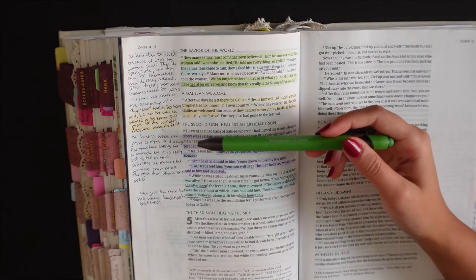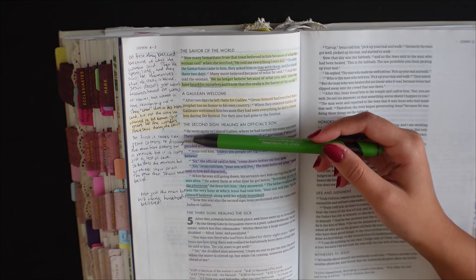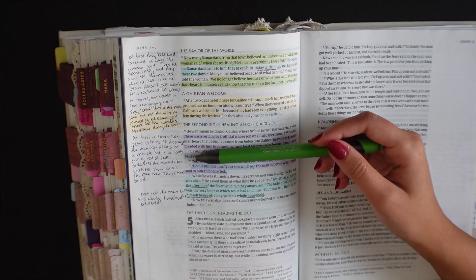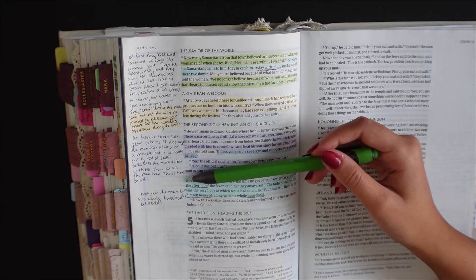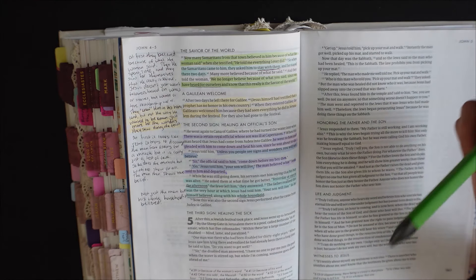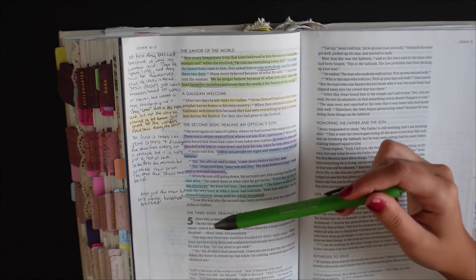And so here I just wrote at first, it looks like Jesus is trying to discourage the man from asking for a miracle, but it is really just a test of faith. So he does the miracle, but with no show at all. The man then shows true belief because he goes, he doesn't ask any questions. He just goes to see. And then I said that it's not just the man, but his whole household that then believed.